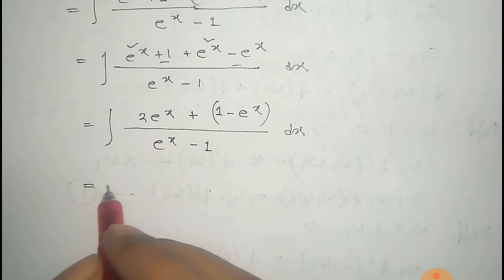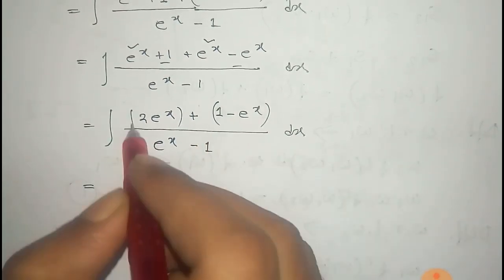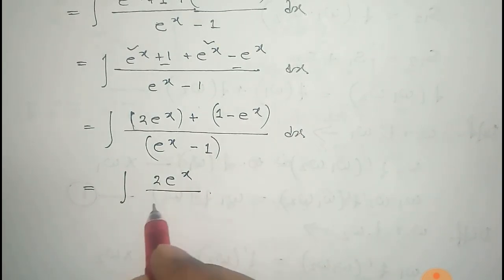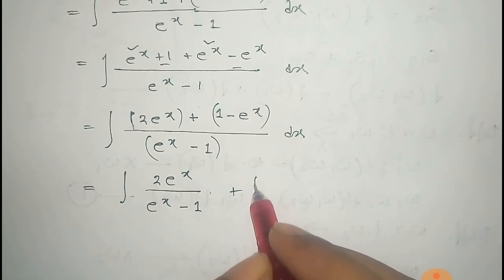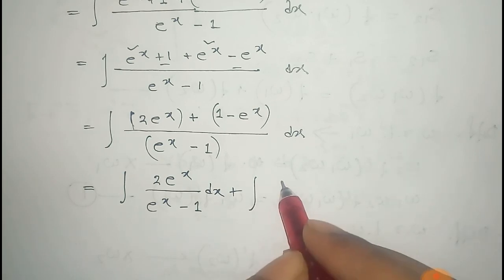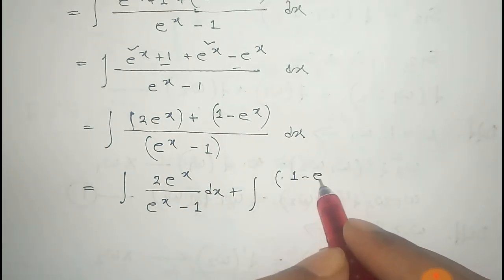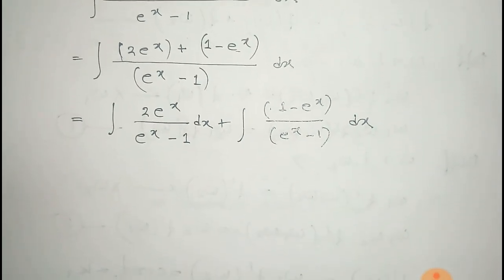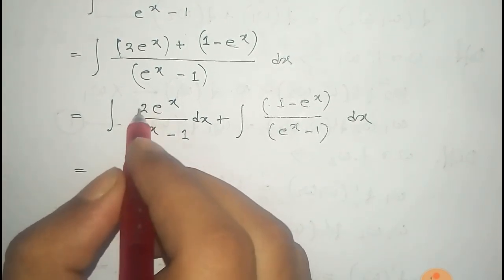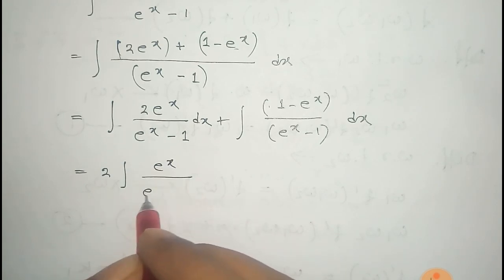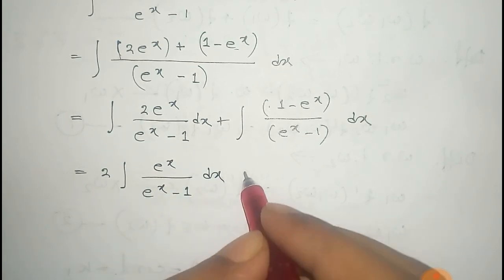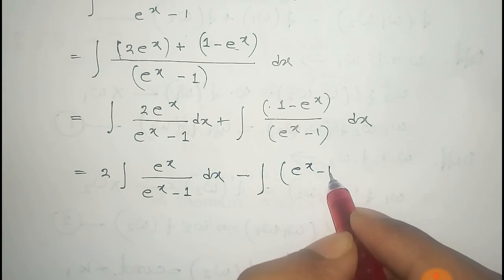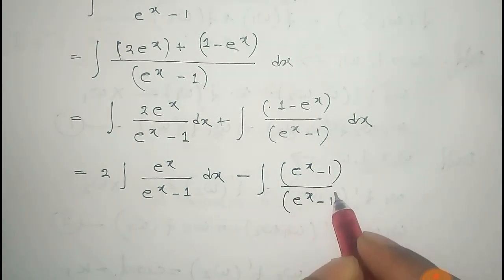If we divide each term by e to the power x minus 1, the expression becomes the integral of twice e to the power x by e to the power x minus 1 dx, plus the integral of 1 minus e to the power x by e to the power x minus 1 dx. That is equal to 2, as the constant, times e to the power x by e to the power x minus 1 dx, plus — taking minus common — e to the power x minus 1 by e to the power x minus 1 into dx.